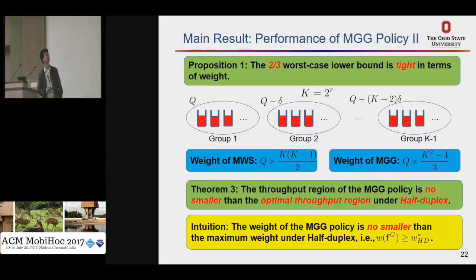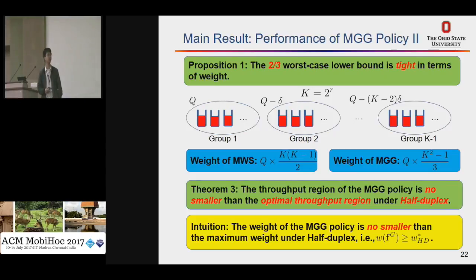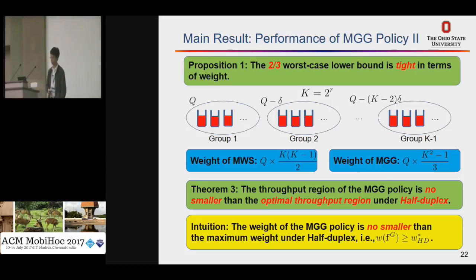We skip the remaining proofs. Another proposition states that the two-thirds approximation ratio is actually tight in terms of weight, with an example showing a scheme that achieves exactly this two-thirds ratio. Finally, a third theorem states that the throughput region of this greedy policy is no smaller than the optimal throughput region under half-duplex, because the weight of our greedy policy is no smaller than the maximum weight under half-duplex.